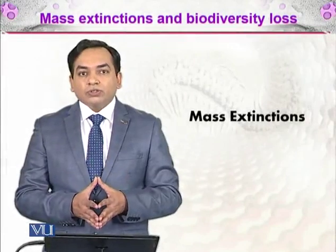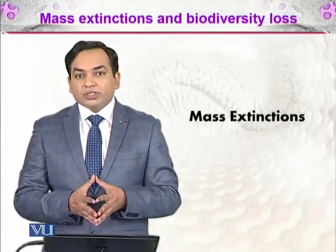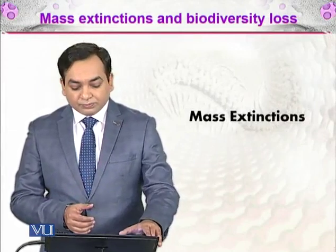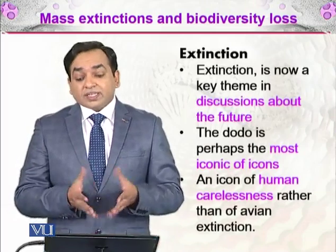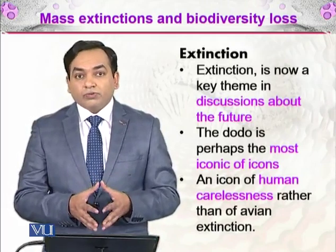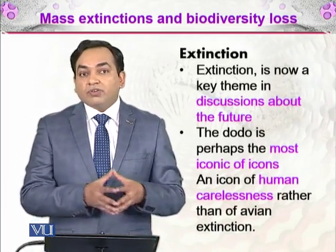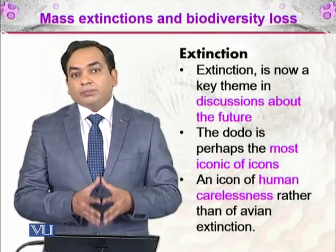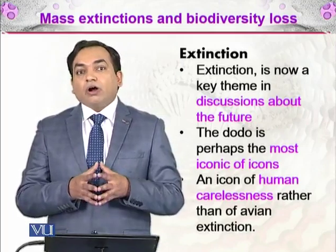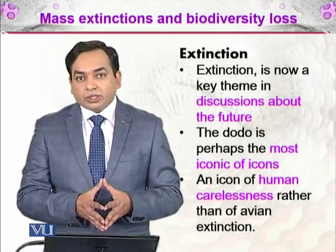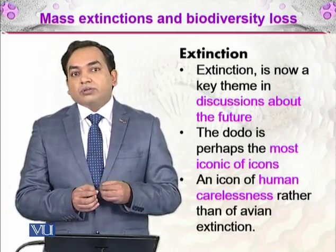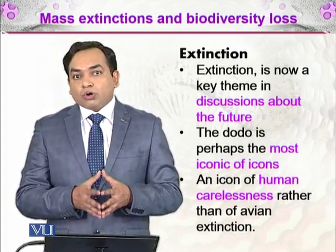We are going to discuss mass extinction and biodiversity loss, focusing on mass extinction. Extinction is when an organism is no longer found. We cannot find a species living in an area for a particular time, and then we say that species has been wiped out of that area — it has gone extinct. If global extinction is happening, it means that organism does not live anymore.